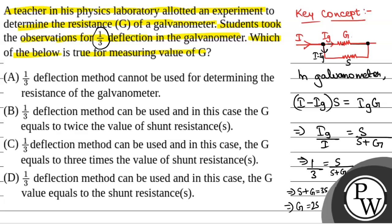The correct option is 1/3 deflection method can be used and in this case G equals twice the value of shunt resistance. That is option B.